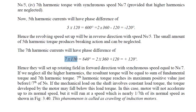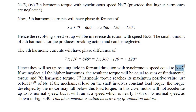The 7th harmonic current's phase difference is 7 × 120° = 840°, which equals 2 × 360° + 120° = +120°. Hence, the 7th harmonic sets up a rotating field in the forward direction at synchronous speed NS/7. If we neglect all higher harmonics, the resultant torque is equal to the sum of the fundamental torque and the 7th harmonic torque.